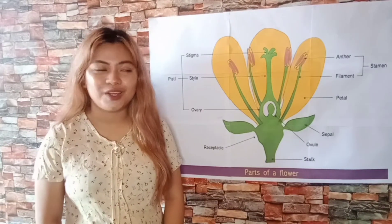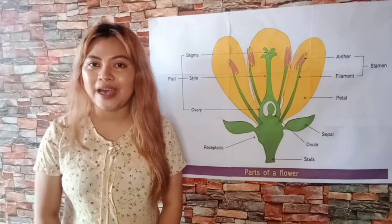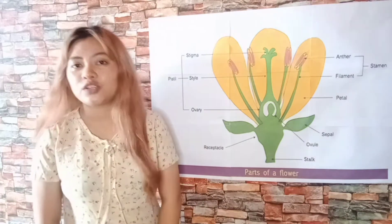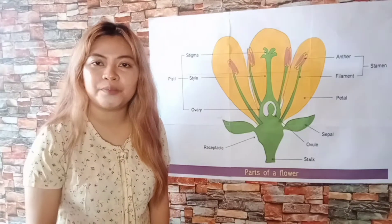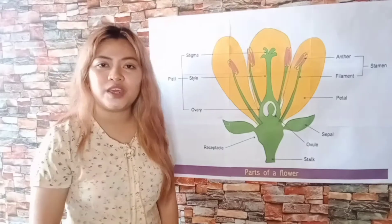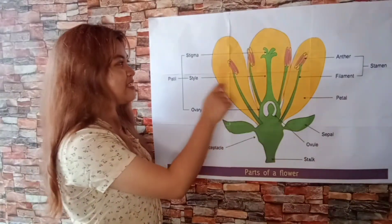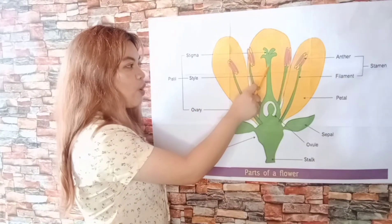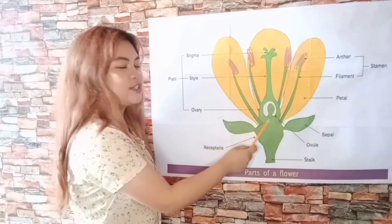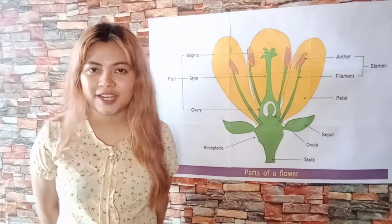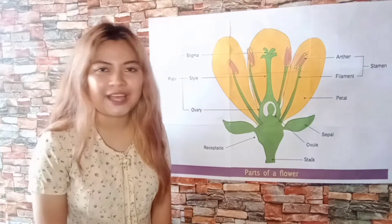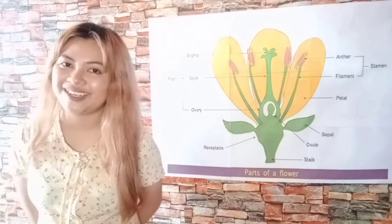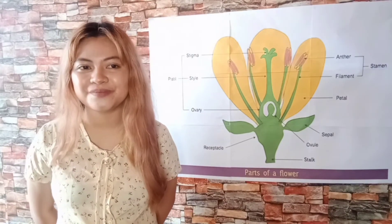To explain the main function of the stamen and pistil: when bees or butterflies sit on a flower, pollen from the anther attaches to their body. When they fly to another flower, that pollen sticks to the stigma, which is the sticky part of the pistil. The pollen travels down through the style to the ovary, where it meets the ovules, starting reproduction and producing a seed that will grow into a new plant. This transfer of pollen from anther to stigma is called pollination.